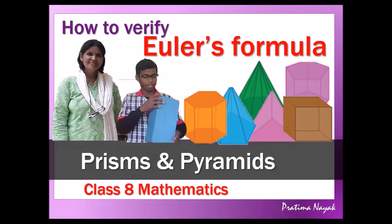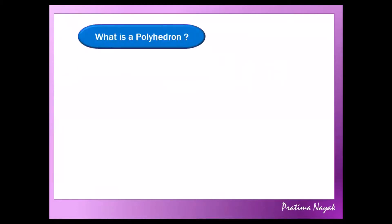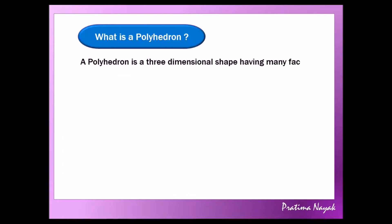Let us begin. Both prisms and pyramids are polyhedra. What is a polyhedron? A polyhedron is a three-dimensional shape having many faces. Mostly in this class, it is your prism and pyramid.